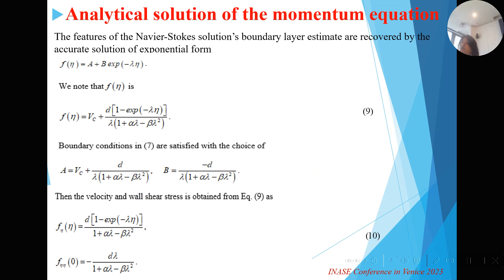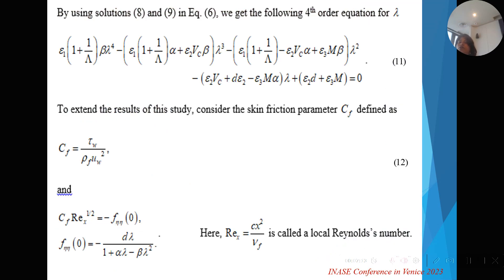This is the analytical solution. We estimate the boundary layer and analyze the accurate exponential form of F(eta) equals VC as equation 9. We distribute constants A and B to satisfy the conditions. After F'(eta) and F''(eta), using equation 8, we get a solution, and with the mathematical formulation we get fourth-order roots. Using these fourth-order roots, we present and plot graphs in mathematical form.